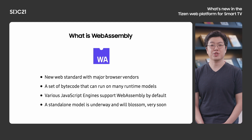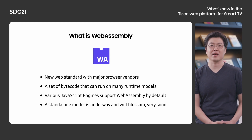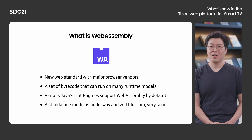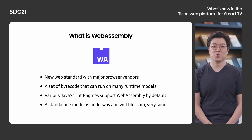Web assembly, in short, is a set of bytecode that runs in major browsers such as Chrome, Safari, Edge, and Firefox. You may have heard of the open-source JavaScript engine called V8, which is shipped on Chromium. Once you visit the site, you will see the definition of V8. V8 supports web assembly as well as JavaScript. Web assembly looks good in the web area. In addition, there are more challenges to run web assembly as a standalone model outside of a web engine.